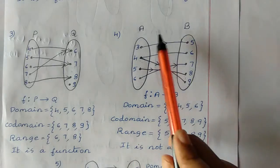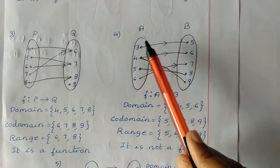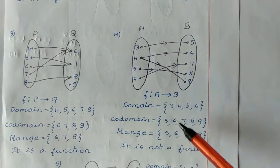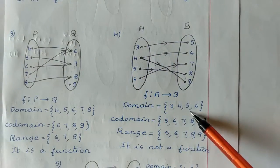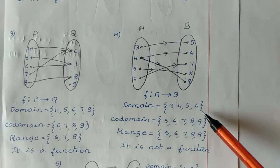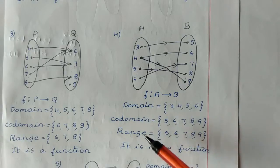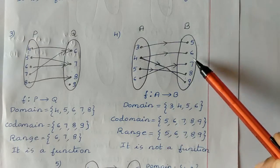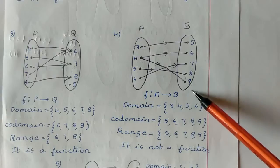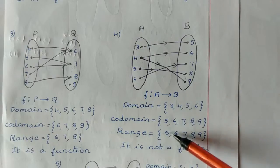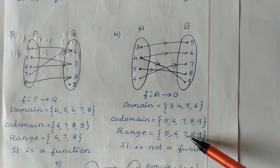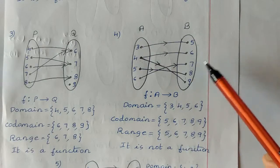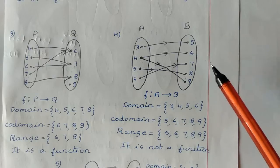For the fourth case: domain is {3, 4, 5, 6}, co-domain is {5, 6, 7, 8, 9}, and range is also {5, 6, 7, 8, 9} since all elements of the second set are participated in the mapping.